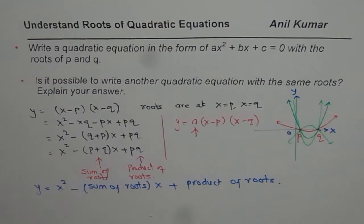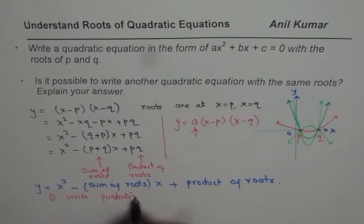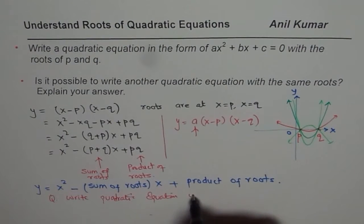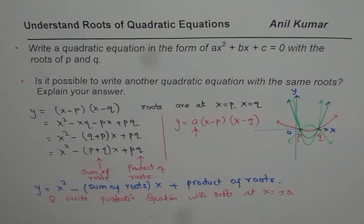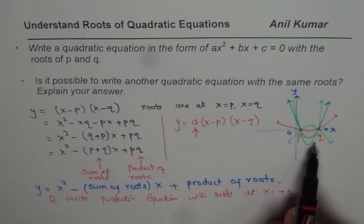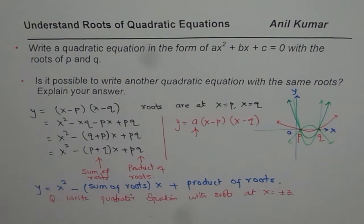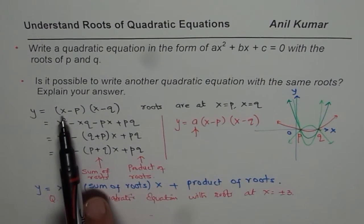Here is a question for you based on what we have learned. You need to write a quadratic equation with roots at x = +3 and x = −3. If I say that the parabola passes through a specific point, then it becomes a unique equation — we will look into that aspect later. But for now, given the roots, you should be able to write the quadratic equation using standard form as x² − (sum of roots)·x + (product of roots), or in factored form as shown earlier.